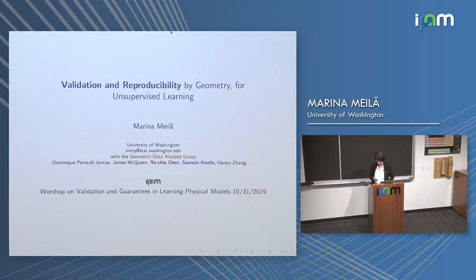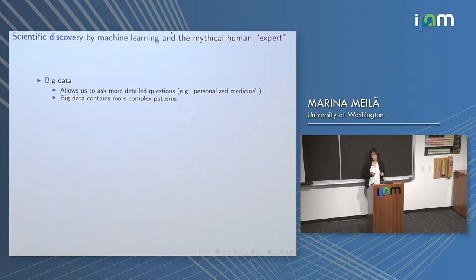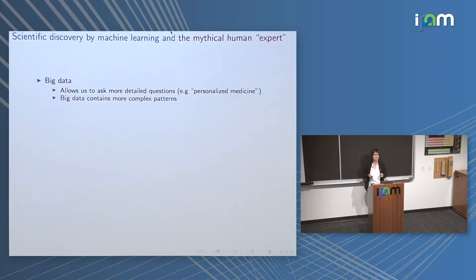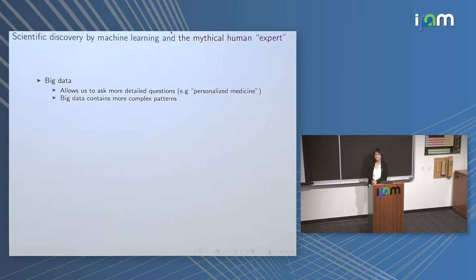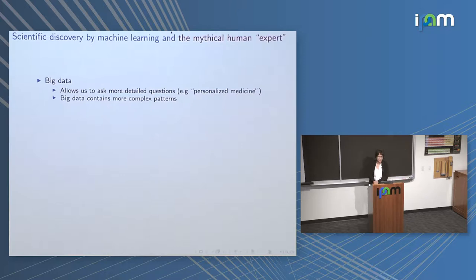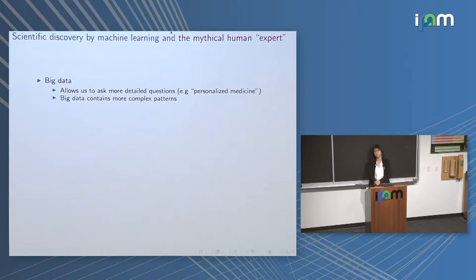I made this talk in what's called accessible mode, so I removed a lot of the formulas. But if you'd like to see more of the formulas, please interrupt and I will provide them. I want to start with a description of one of the most important directions of my research program over the last few years: to provide machine learning that is usable for scientists, and in particular to make machine learning serve the physical sciences.